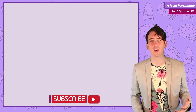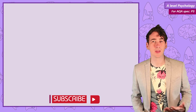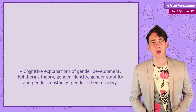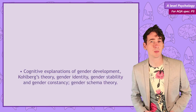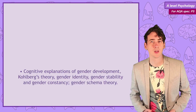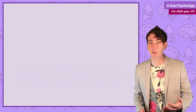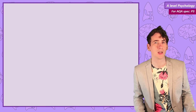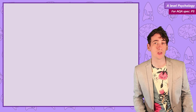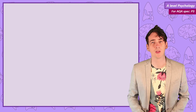We are now moving onto the psychological theories of gender development, and the first is cognitive. Cognitive psychology is about how information is mentally processed, so is our experience of our own gender and our expectations of other people's gendered behaviour not a biological inevitability, but simply due to the development of certain schemas and not others.